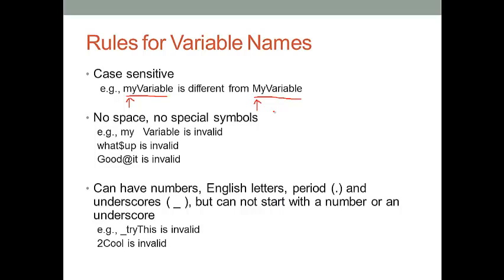Second, we cannot use any white space or special symbols in a variable name in R. For instance, a variable called what$up is considered invalid because $ is a special symbol. Similarly, the @ symbol is also special, so we cannot use it. Third, we can use numbers, English letters, period symbols, or underscores in a variable name. However, we cannot start with a number or an underscore.